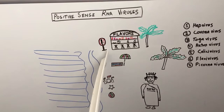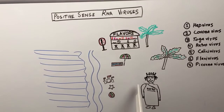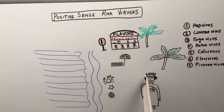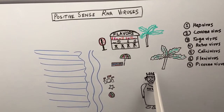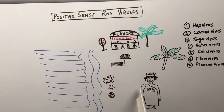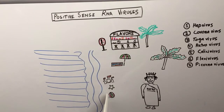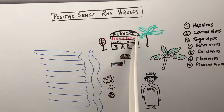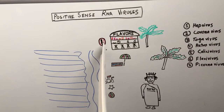The restaurant called Flavors Restaurant represents Flavivirus. The no pee sign, but he pees in the corner anyway — Picornavirus. So the full list is: Hepevirus, Coronavirus, Togavirus, Retrovirus, Calicivirus, Flavivirus, and Picornavirus.